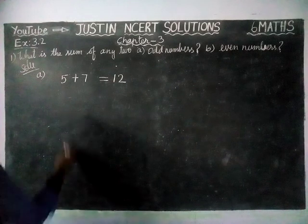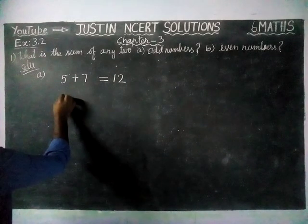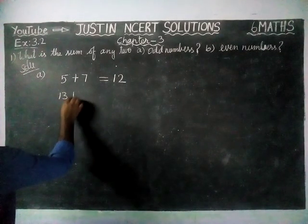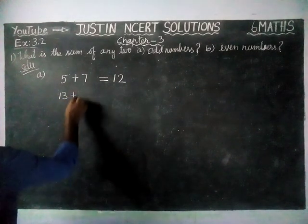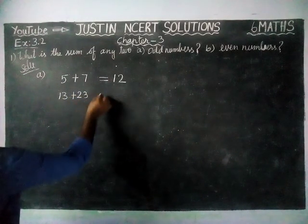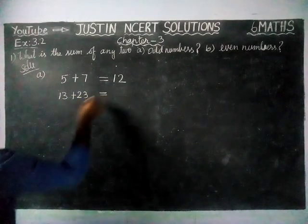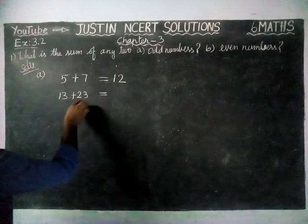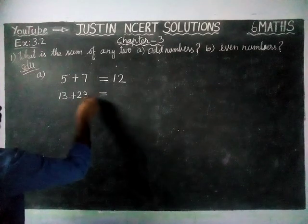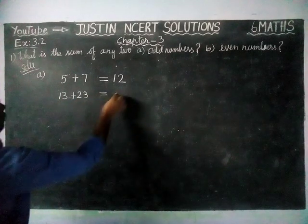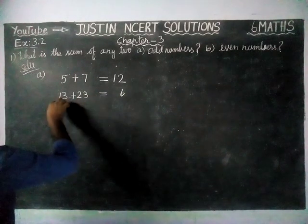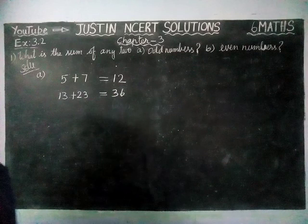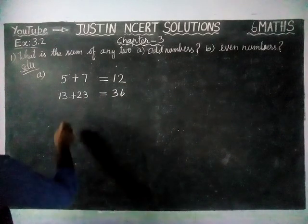Next, we will take 13 plus 23. 13 plus 23 is equal to 36. 36 is an even number.